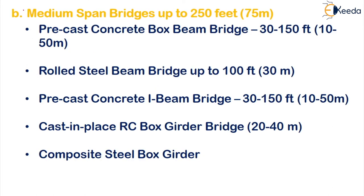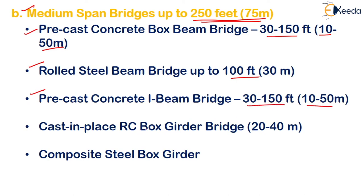Moving on to medium span bridges, which are up to 250 feet or 75 meters. Examples include precast concrete box beam bridges of 30 to 150 feet or 10 to 50 meters, rolled steel beam bridges up to 100 feet or 30 meters, precast concrete I-beam bridges of 30 to 150 feet or 10 to 50 meters, cast-in-place RC box girder bridges of 20 to 40 meters, and composite steel box girders under 75 meters span.